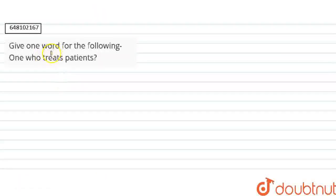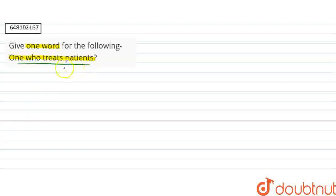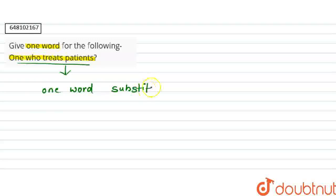Hello everyone, so let's start with our question. And here our question is: give one word for the following — one who treats patient. So in this question, we are given with the sentence 'one who treats patient' and we have to find one word substitution for this.